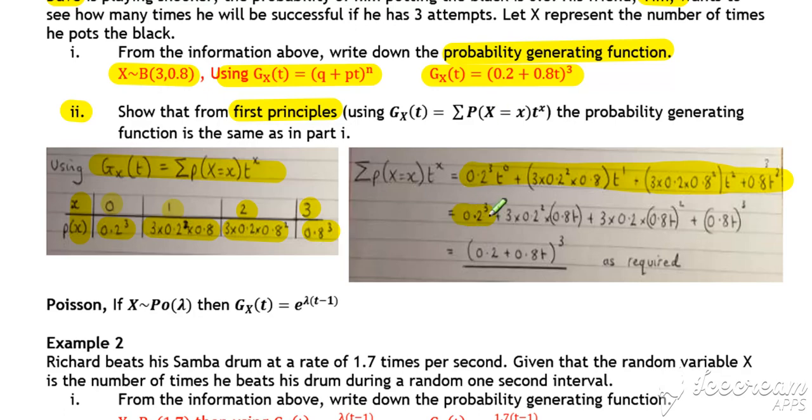So in our second line of working here, if we just bring t inside the brackets in each case, so we take the t that was sitting outside of our bracket and put it inside the bracket here, then the knack to the first principles process for the binomial distribution is then to recognize that the expansion that we've got on this line is equivalent to this bracket cubed.